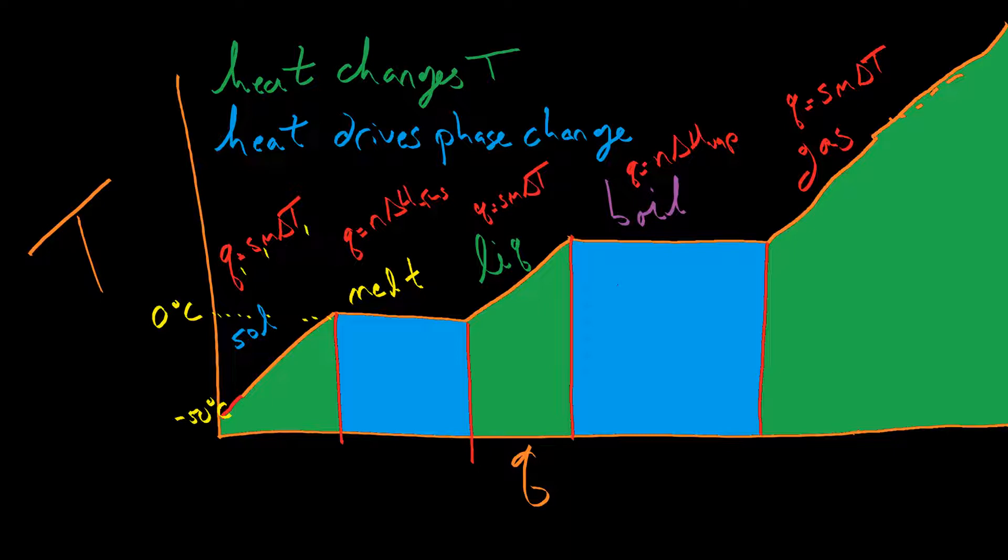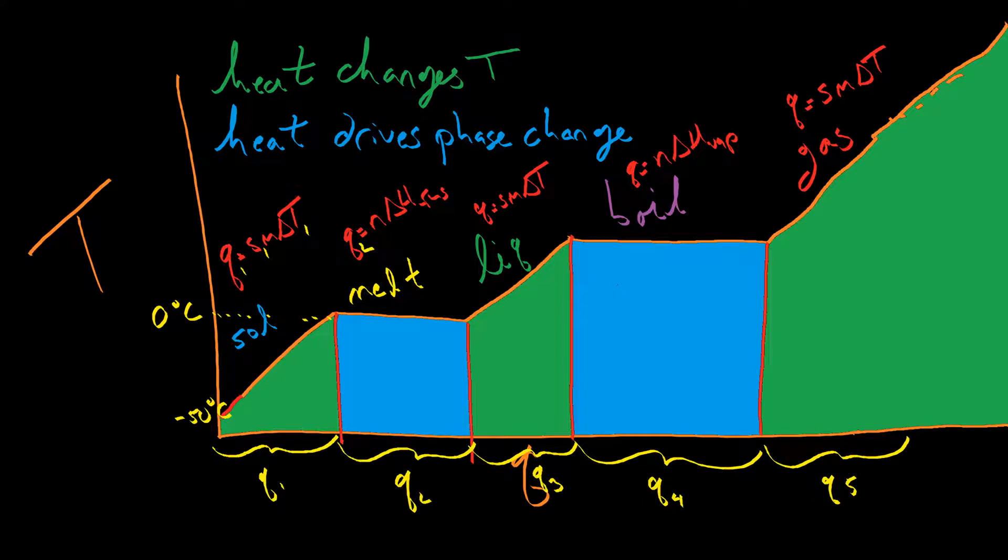You need the specific heat capacity of ice, which is going to be different from the specific heat capacity of liquid water. It's a different substance, or at least a different phase of the same substance. Multiplied by M, the mass, 100 grams, multiplied by the change in temperature, in this case, 50 degrees. Then, how much energy does it take to melt the ice? How much energy do you have to put in to pull the particles apart and get them to stop being solid and turn into a liquid? Then, how much energy does it take to raise the temperature of the, now, liquid water from zero degrees Celsius up to 100 degrees Celsius? Then, how much energy does it take to boil it?